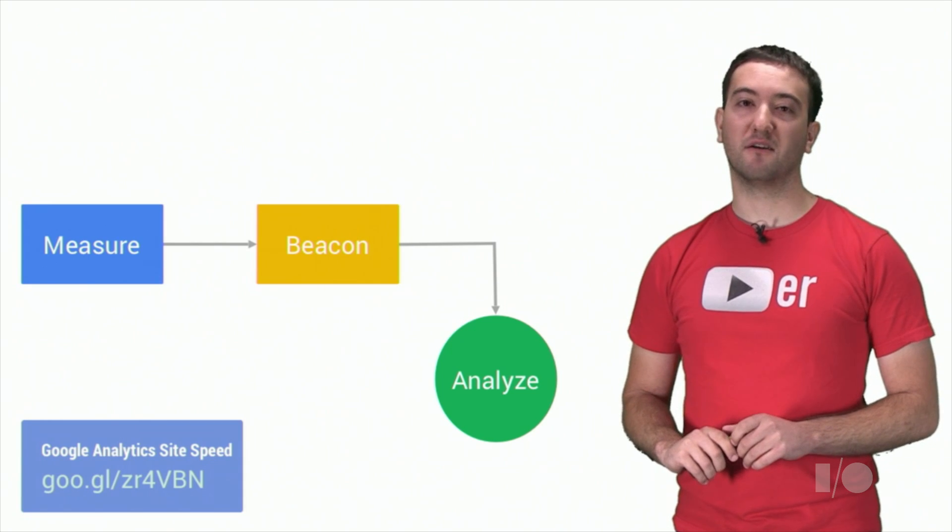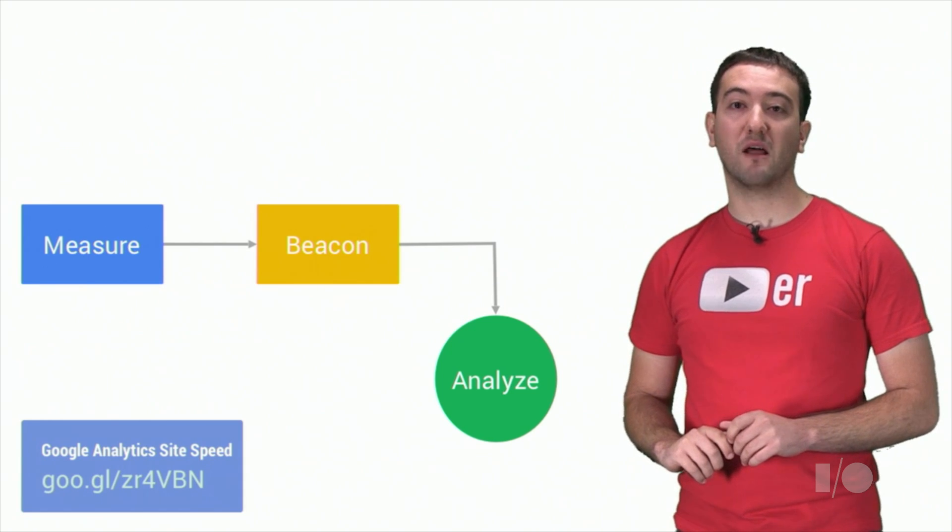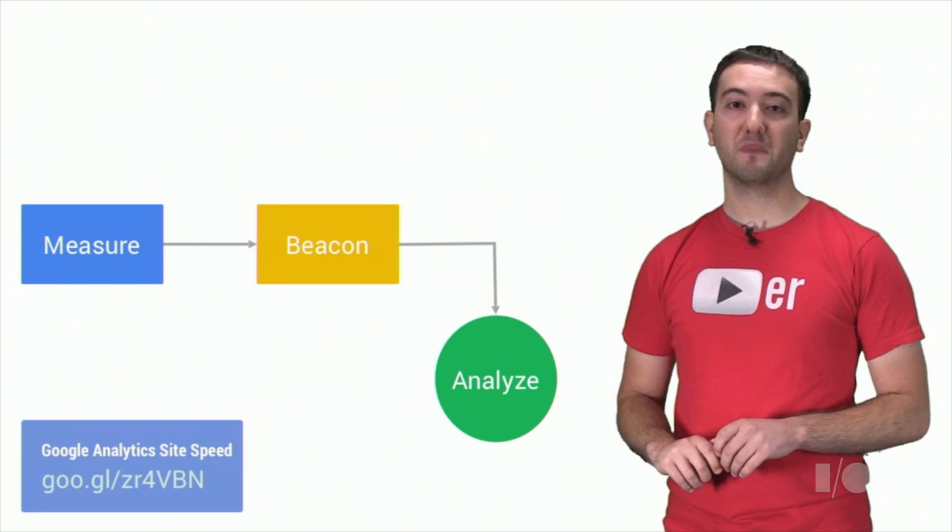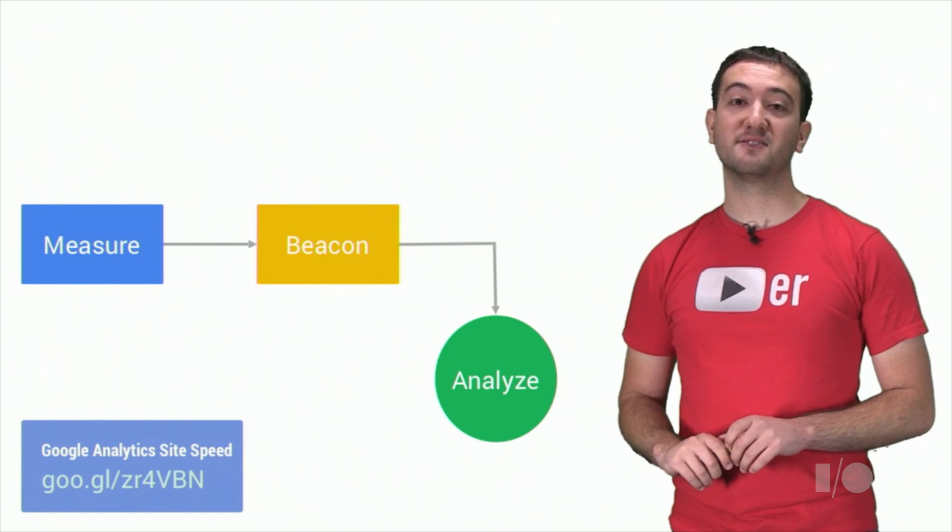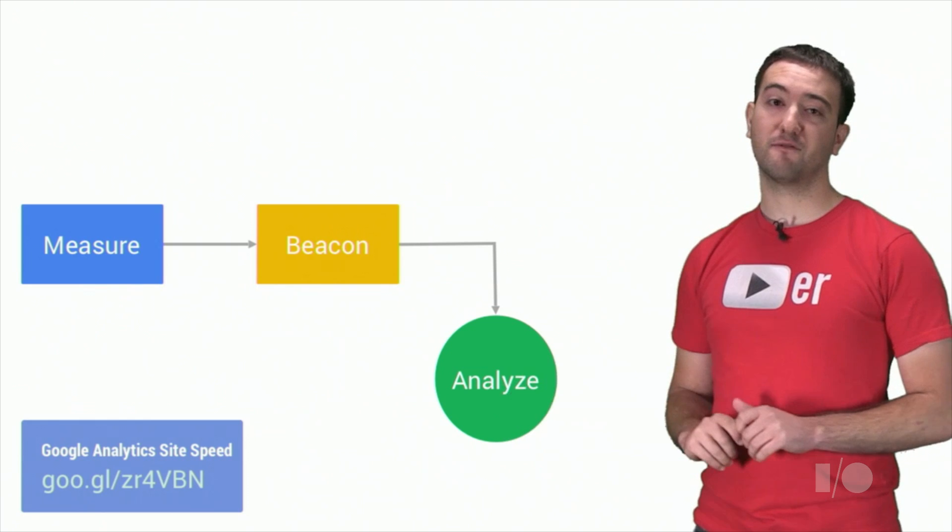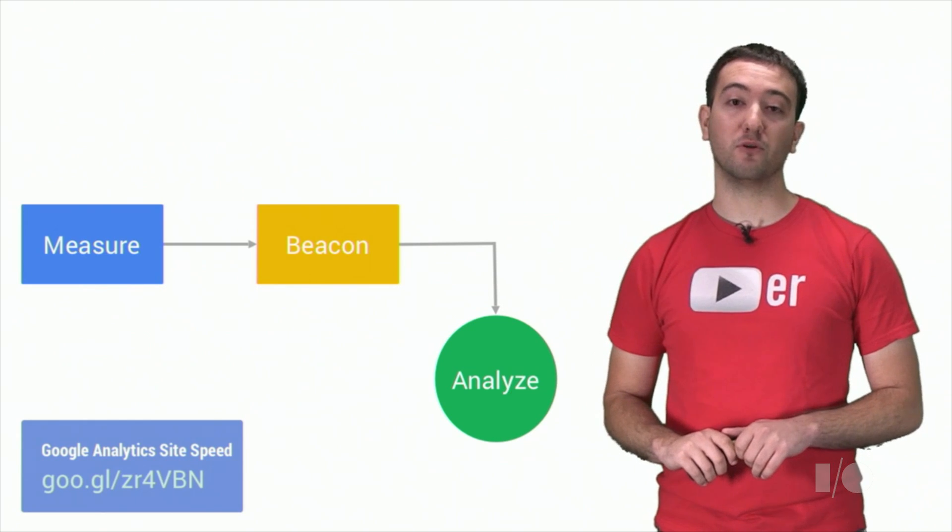RUM works on three basic levels. First, we instrument our client-side code to provide timing and page state data to the RUM JavaScript library. Then, the library packages up the data and sends it off to the analytic server for later use. And finally, the analytic server provides developers with a dashboard to view the results.